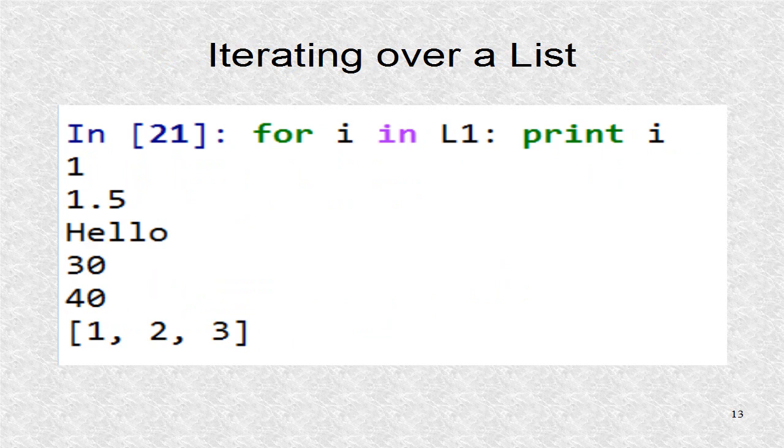If we want to iterate over a list, we can use the for loop. Here the block that is executed for each element is just one line long, mainly a print statement.